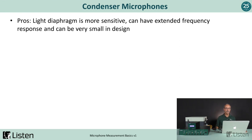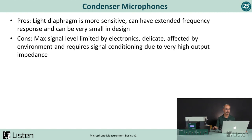The pros of condenser microphones are that they have very light diaphragms, so they can be very sensitive, they can have extremely extended frequency response, and they can be quite small in design. The cons are that maximum signal levels are limited by the onboard electronics, they are very delicate, they are very affected by the environment — temperature, humidity — and they require signal conditioning due to their very high output impedance.